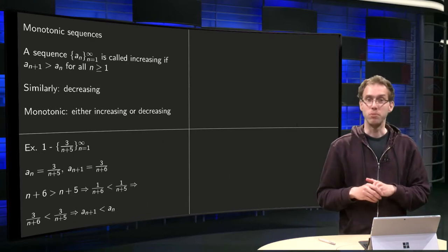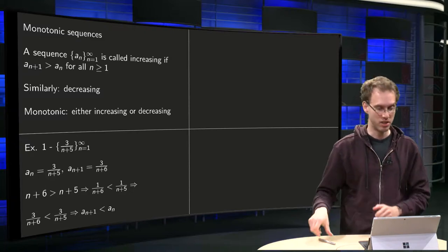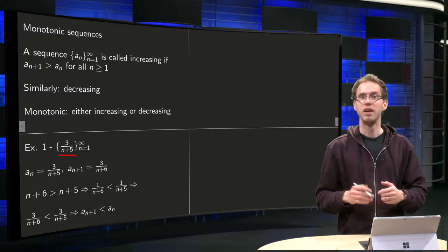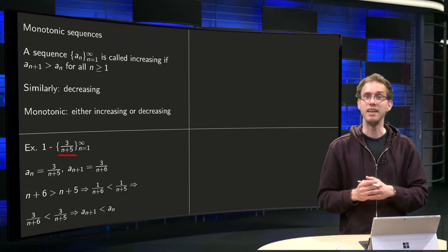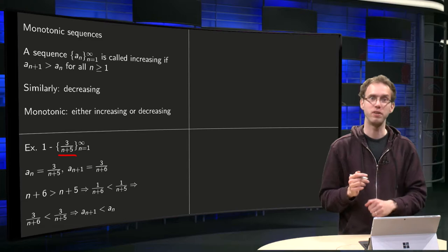So let's do some examples to see how we can prove that the sequence is increasing or decreasing. Take first 3/(n+5). I can see already, if you put higher and higher n, you'll see that the elements are getting smaller and smaller, so it's probably decreasing, but how do you prove it?